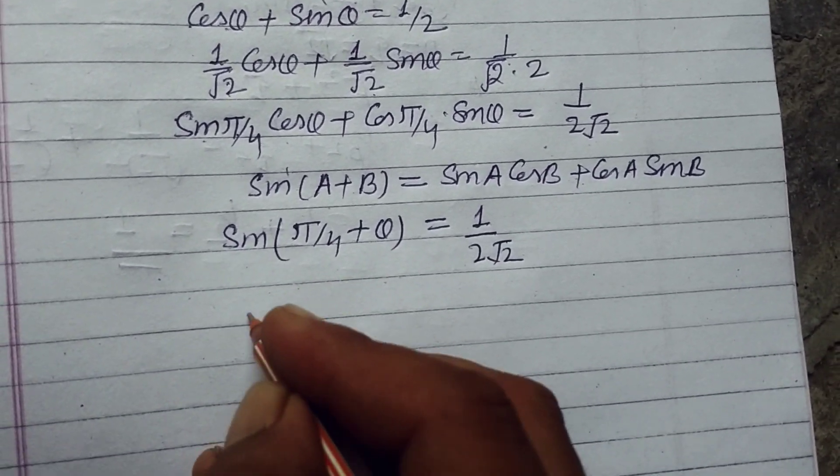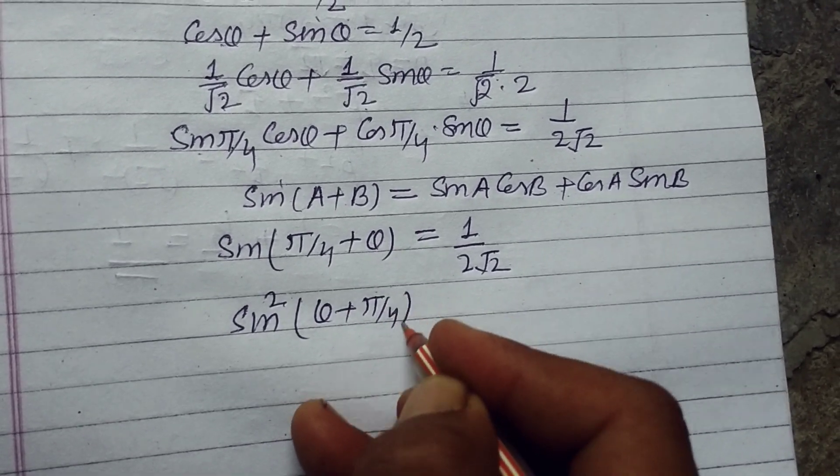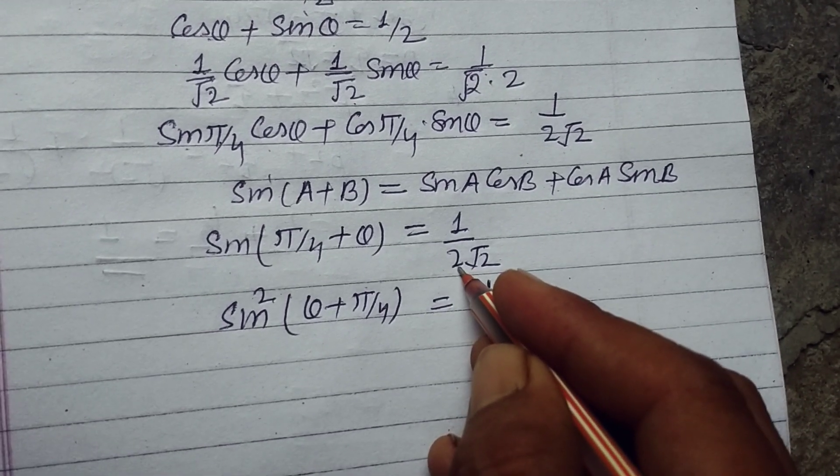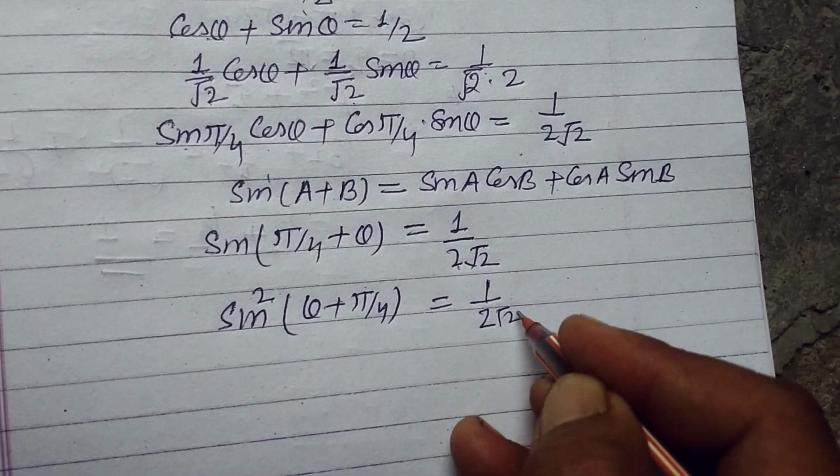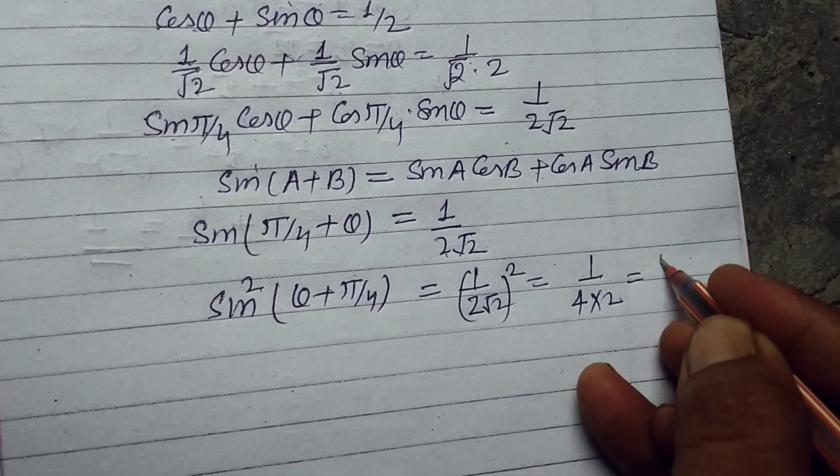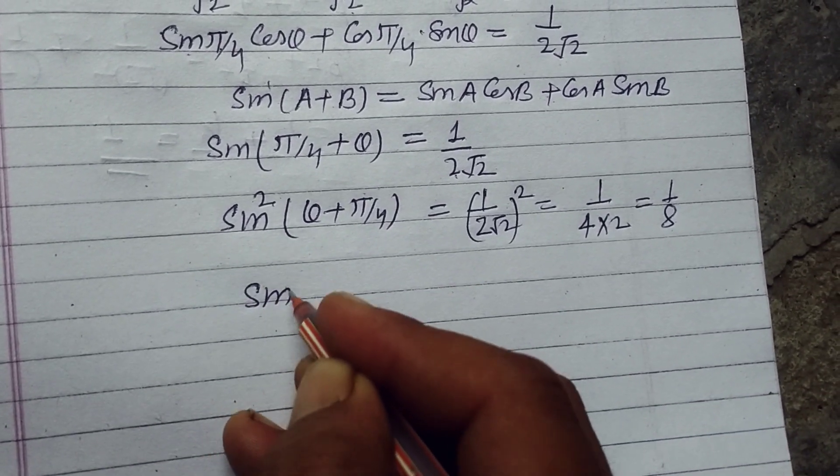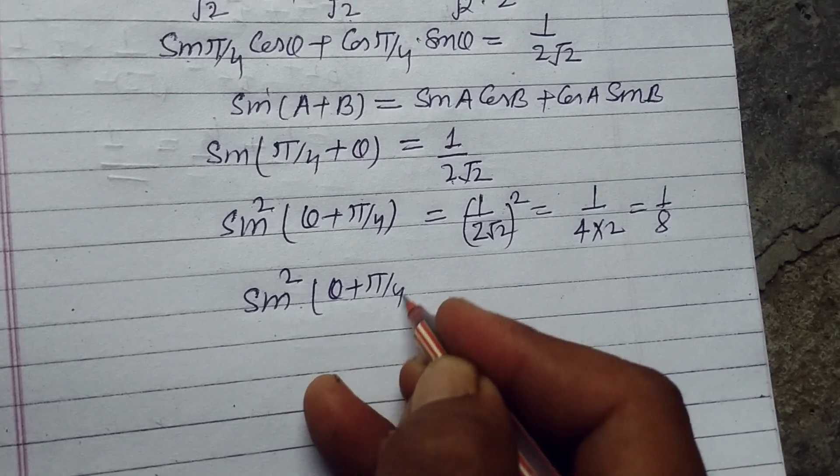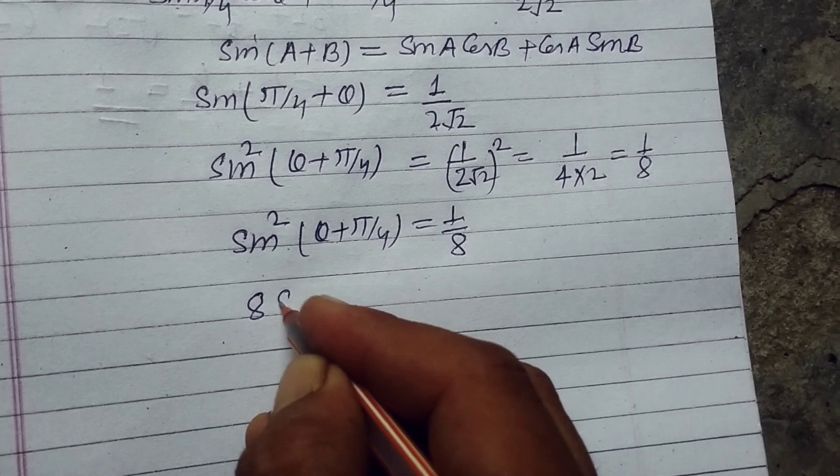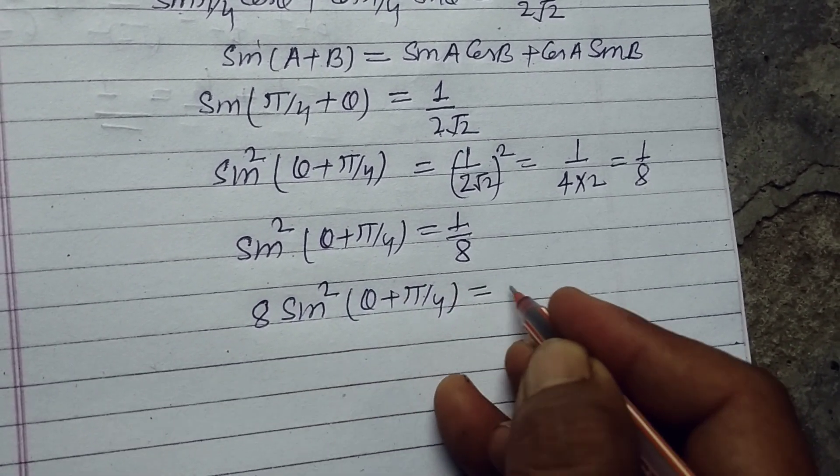Now squaring both sides, we got sin²(θ + π/4) = (1/(2√2))², which equals 1/(4×2) = 1/8. So sin²(θ + π/4) = 1/8. On cross multiplication, we got 8 sin²(θ + π/4) = 1.